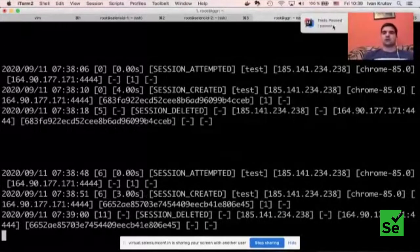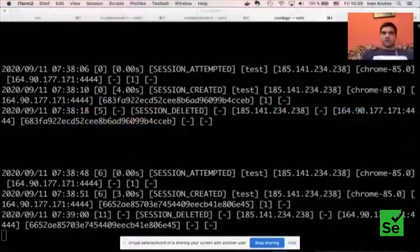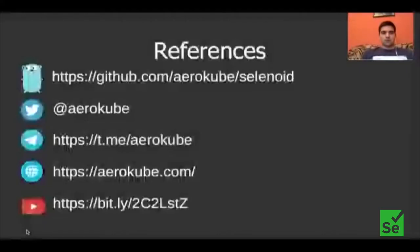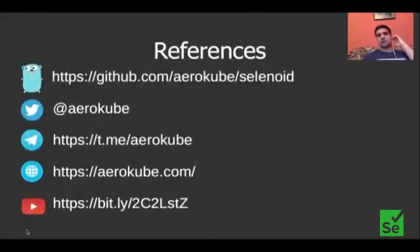That's pretty much everything I would like to show you today. At the end of my talk, here are some useful references and links. There is a GitHub URL with the Selenoid repository — in the same organization you can find repositories for GGR and these demo projects. Here is our Twitter, our Telegram channel where you can ask any questions related to these tools, our website with links to useful articles related to efficient Selenoid infrastructure, and our YouTube channel where we publish related videos. Thank you for your attention — you can now ask your questions.